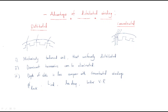In the distributed winding, for example, the slots are equally distributed. In the concentrated winding, we have three phases, and all the phases are connected to only one slot.